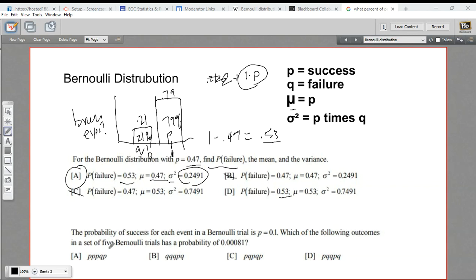Let's look at one other type of problem. This one down below says the probability of success for each event in a Bernoulli trial is p equals 0.1. Let me stop here for a second. I think we're going to need q, so let's just go ahead and calculate q, which is pretty easy. We just take 1 minus 0.1, so this is 0.9.